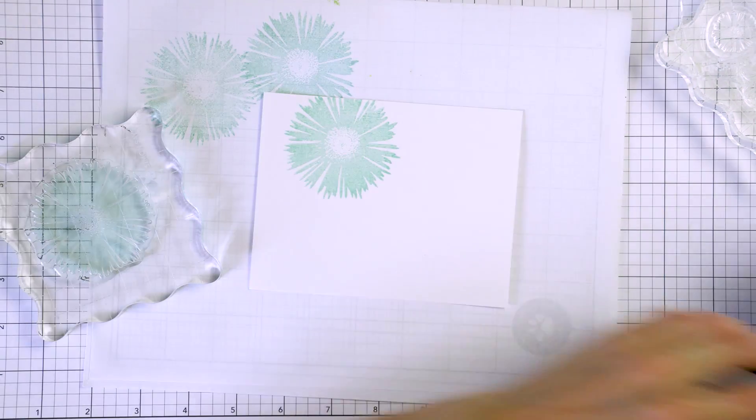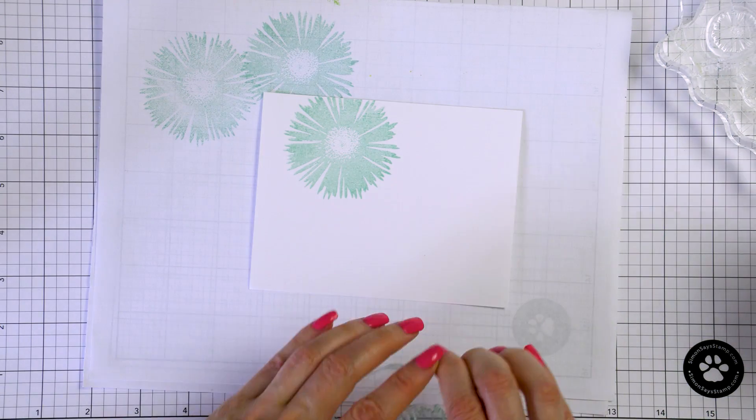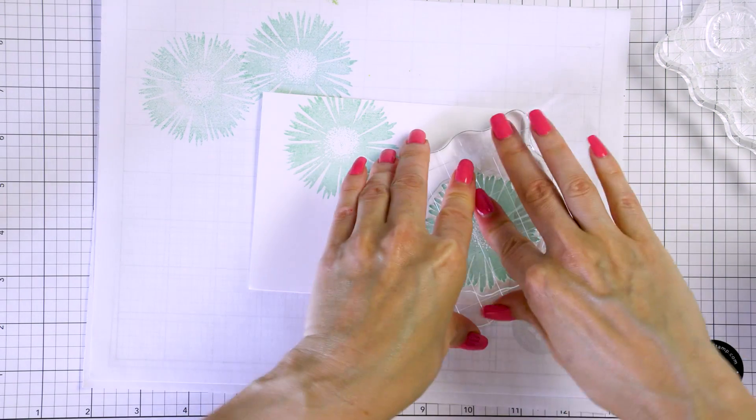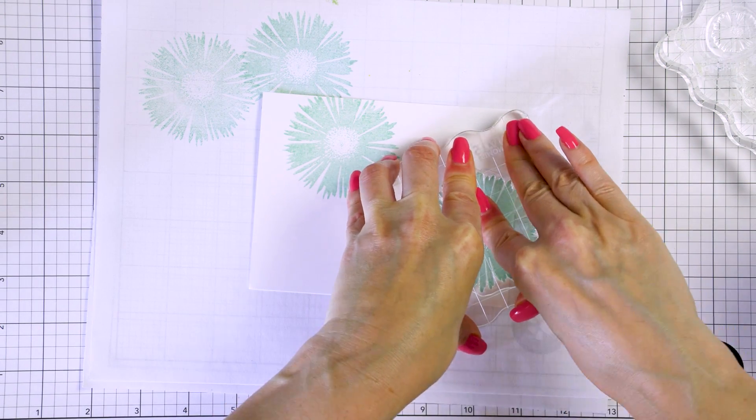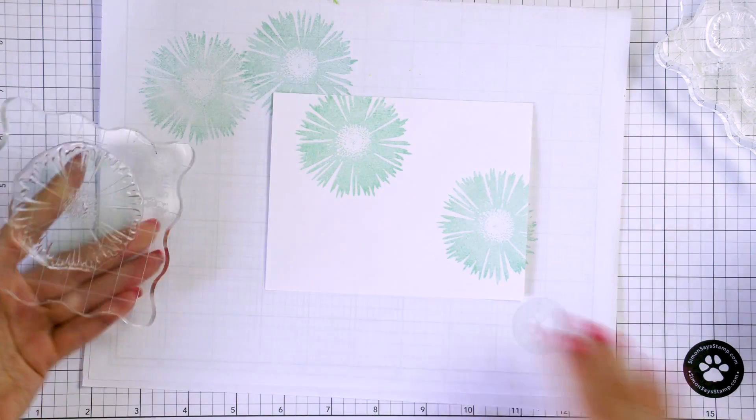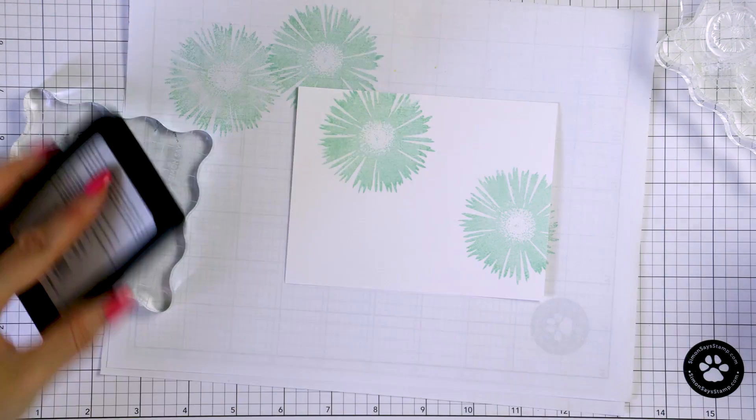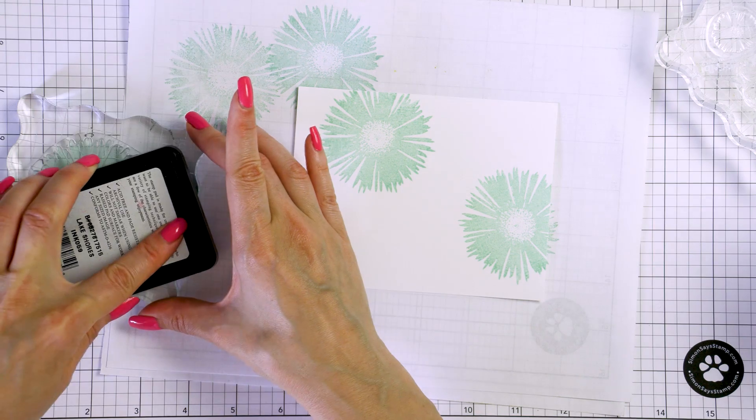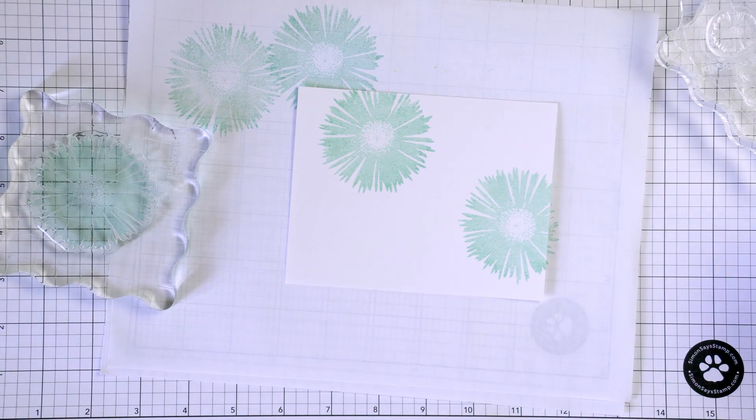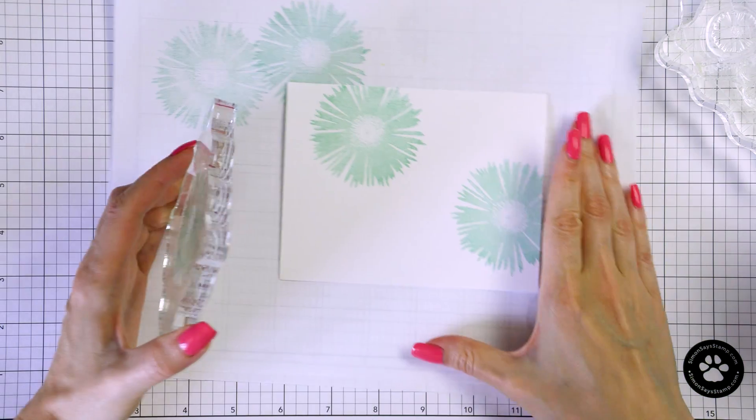Once we are done stamping the pattern, any imperfections really won't be visible on the finished card. Because these are brand new stamps I first inked the stamp up and stamped it off to the side a few times to prime it and you can see that the second impression was already better than the first one.